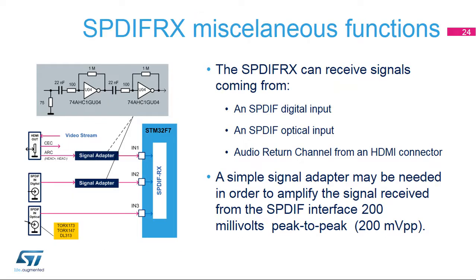The SPDIF-RX can receive signals from an SPDIF digital input, an SPDIF optical input, and an audio return channel from an HDMI connector. A signal adapter may be needed to amplify the signal received from the SPDIF interface (200 mVpp). Using one or two unbuffered inverters can be sufficient in most cases. Note that for SPDIF encoding, the signal polarity can be inverted without affecting the decoding, since only the transitions are used by the receiver.